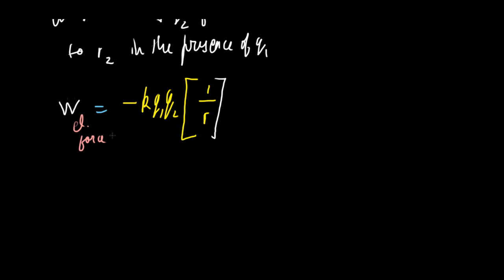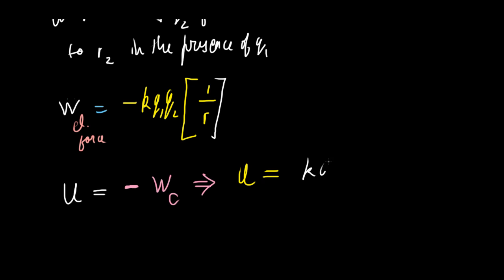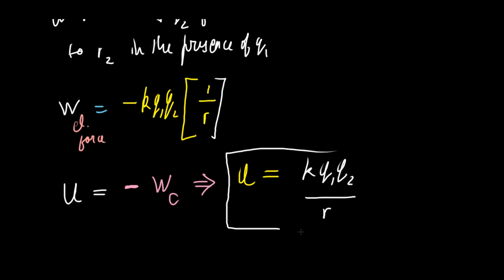Potential energy is defined as the negative of the work done by conservative forces. So electrostatic potential energy is the negative of the work done by the electrostatic force. Since the work done was already negative (minus k q1 q2 over r), taking the negative of that gives us k q1 q2 over r. This is the definition of electrostatic potential energy.